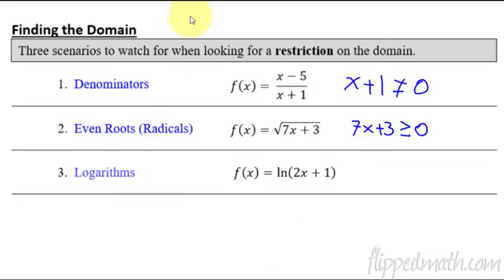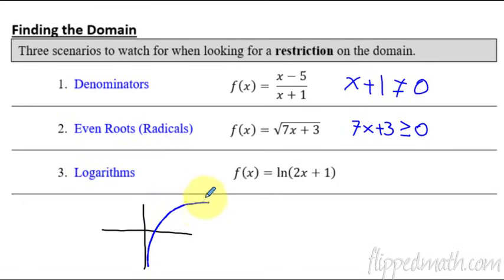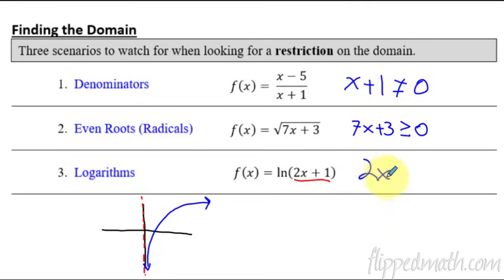The last thing to check for is when we have logarithms. A logarithm graph is the inverse of an exponential graph — it goes up and to the right and has a vertical asymptote. The graph will never actually reach where x is zero, so whatever's inside the logarithm cannot be zero; it has to be bigger than zero. So for example, 2x plus 1 must be greater than zero. These are the three main restrictions on the domain you'll be faced with today.